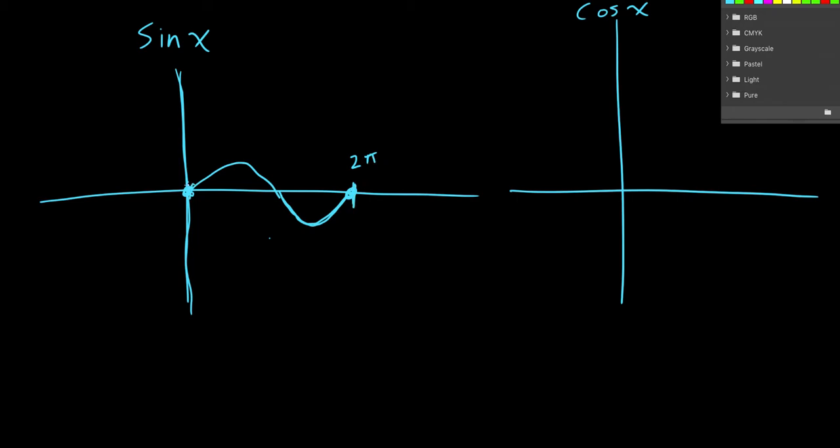So right there is 2 pi, this is 0, and then if we think about the maximum, it's 1, the minimum, negative 1. Okay?